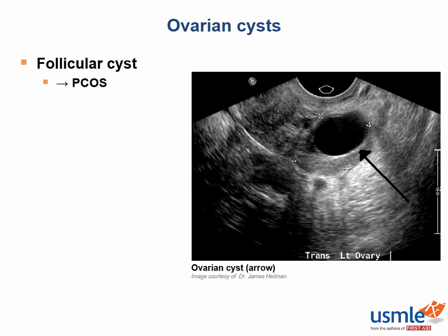Follicular cysts are swollen, unruptured Graafian follicles. They are associated with high estrogen states like endometrial hyperplasia. If they rupture during the middle of the menstrual cycle, they can cause pain. And what is that called? Mittelschmerz.